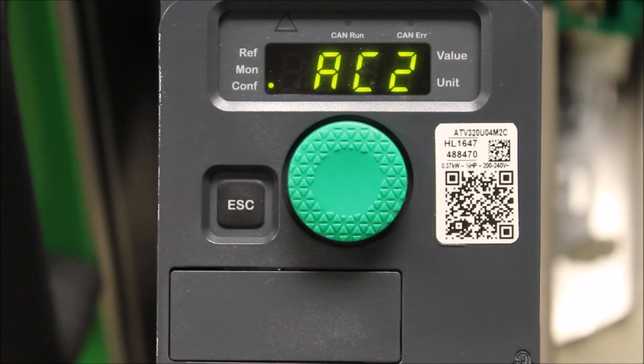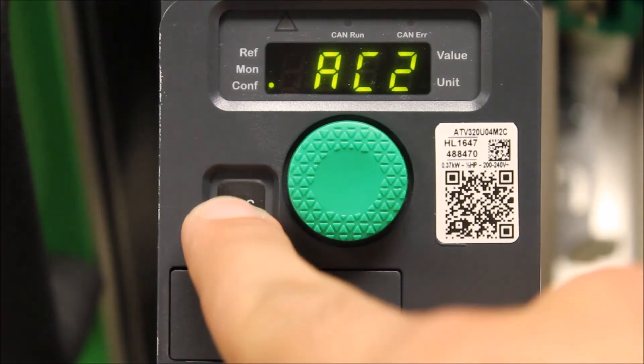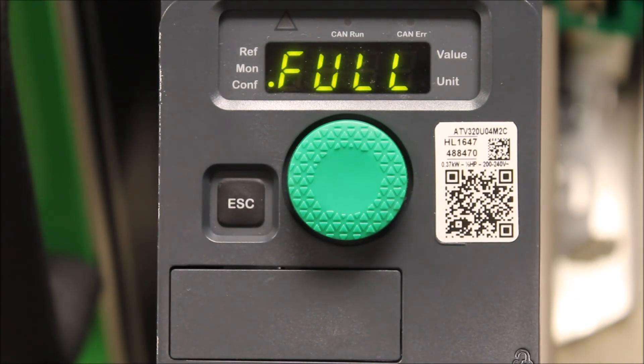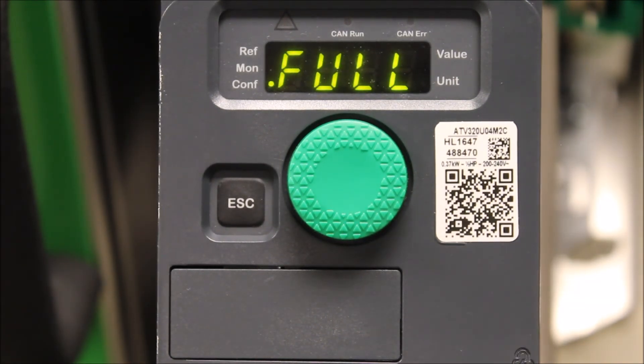So this is basically how you program the ATV 320 drive to do ramp switching - either by using a digital input or by using a frequency threshold to toggle the secondary ramp up and ramp down times.